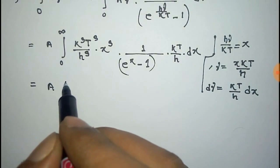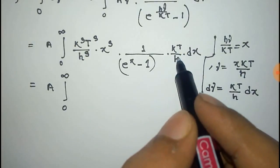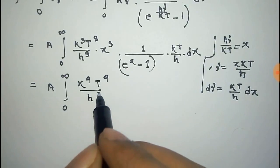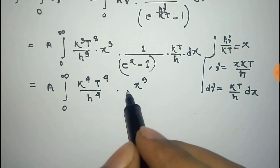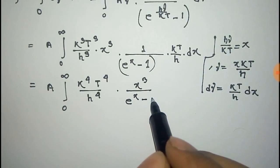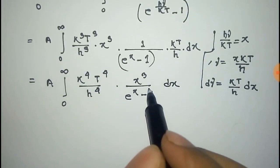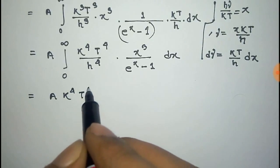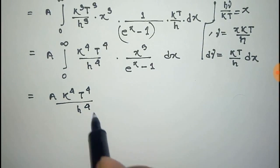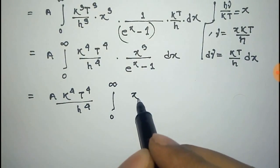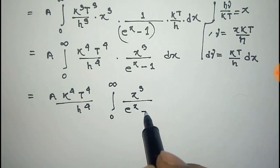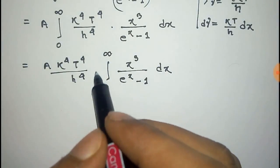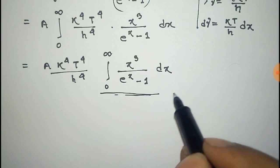Multiplying these terms together, we get (k⁴T⁴ / h⁴) · x³ · (1 / (e^x − 1)) dx. Taking the constant part out of the integration, it becomes A·(k⁴T⁴/h⁴) times the integral from 0 to infinity of x³/(e^x − 1) dx.